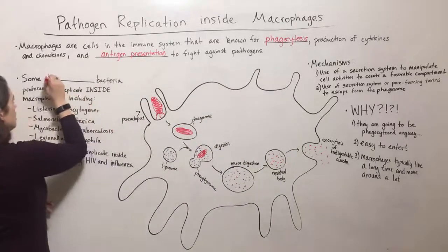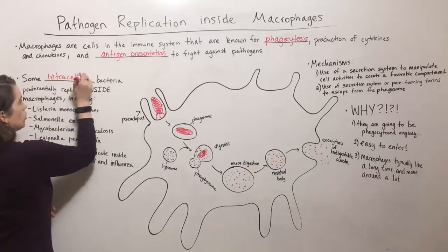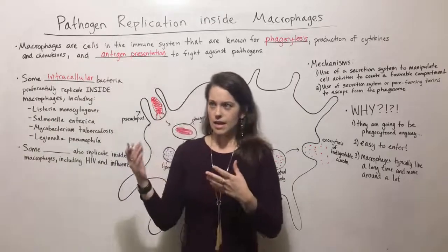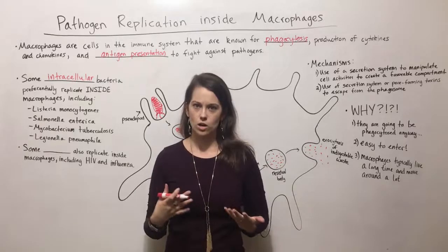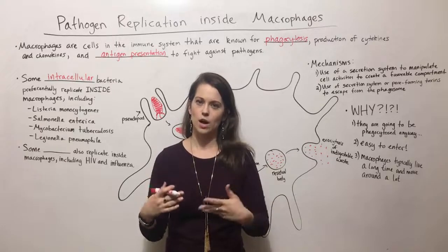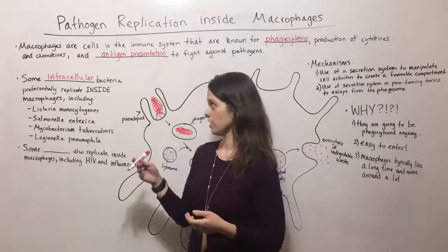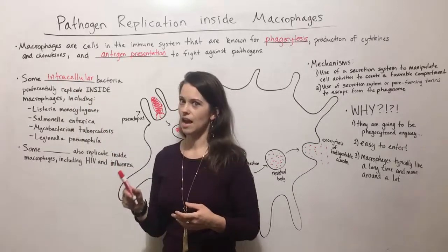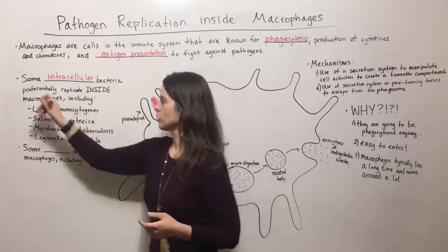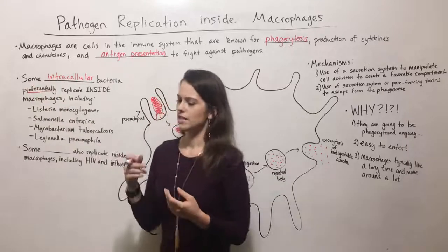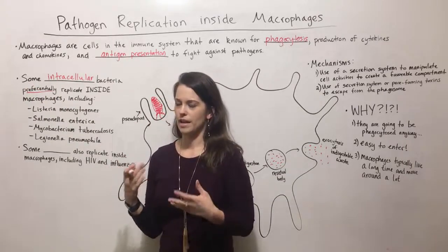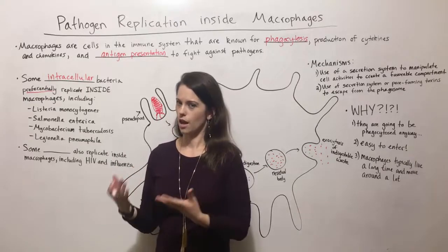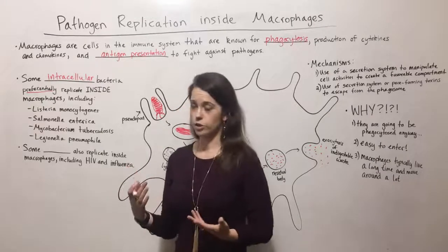There are some bacteria. In particular, these are all intracellular bacteria, meaning that they're pathogens that enter host cells and replicate inside host cells instead of replicating inside the body but outside of cells — those would be extracellular bacteria. So these are intracellular bacteria, and some of them actually preferentially replicate inside macrophages. Preferentially is the key term here because it's not just that they replicate inside a cell, but they prefer to replicate inside macrophages versus other types of cells, which is maybe a little counterintuitive.